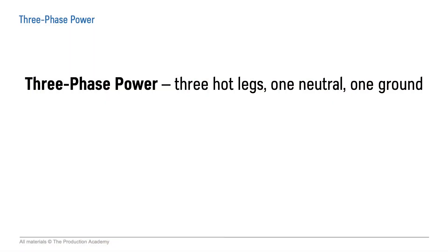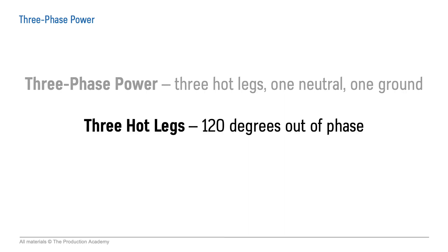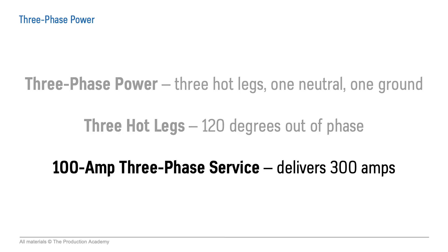First, we see how 3-phase power has 3 hot legs, 1 neutral, and 1 ground. Then we see how the 3 hot legs are 120 degrees out of phase. And we learn that a 100-amp 3-phase service actually delivers 300 amps.